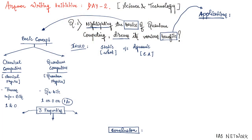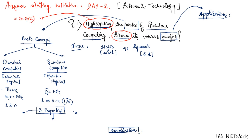I already have some fodder points made for this question. If we look at the question, there are two keywords: quantum computing and its benefits. There are also two question tags — one is 'highlight' and the second is 'discuss.' Highlighting is a very light keyword and does not have much weightage, so we will dedicate roughly 20 to 30 percent of our answer to it. 'Discuss' is a heavy keyword, so we will allocate roughly 70 to 80 percent of our answer to the discuss part.